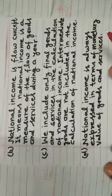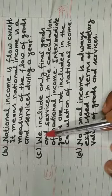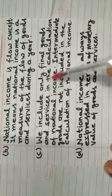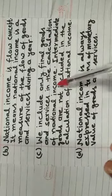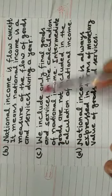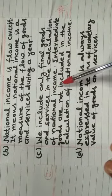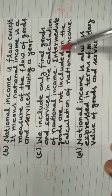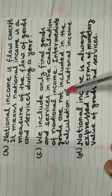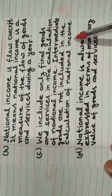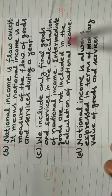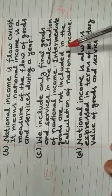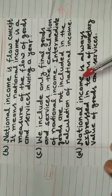Third feature of National Income: only final goods are calculated in National Income, and intermediate goods are not included in the calculation. So, the main point is that final goods are used to calculate National Income, and intermediate goods are not.